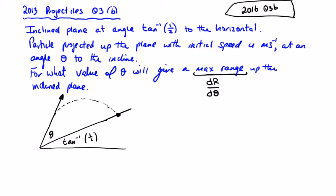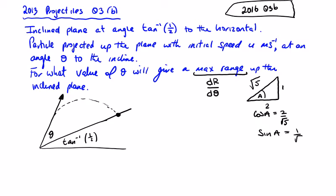We start by looking at the angle: inverse tan of 1 over 2. Call it angle a — opposite over adjacent gives a hypotenuse of root 5. So cos a is going to be 2 over root 5, and sin a is going to be 1 over root 5.